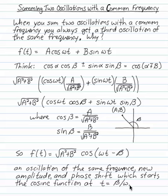This is a single oscillation with the same frequency as the two originals. It's got a different amplitude. It also has a phase shift. In other words, it starts the cosine function at a different time. Beta over omega. It's called the phase shift.